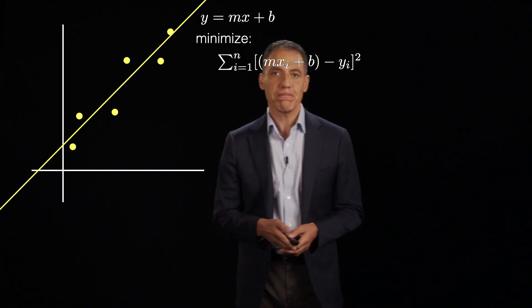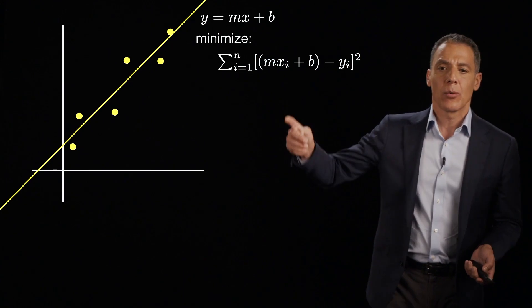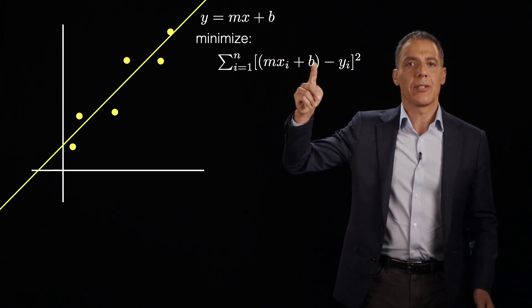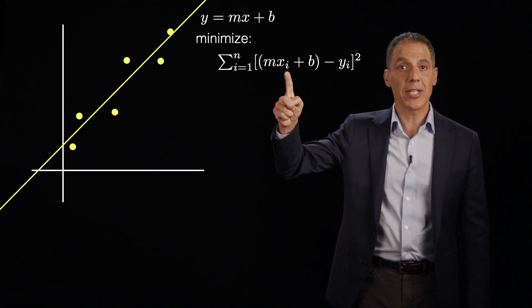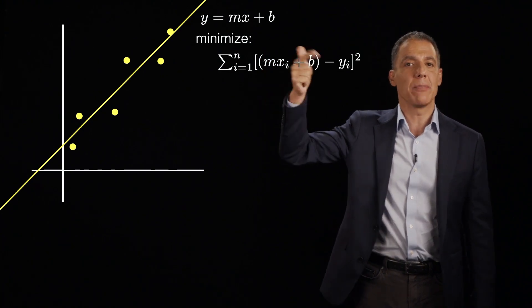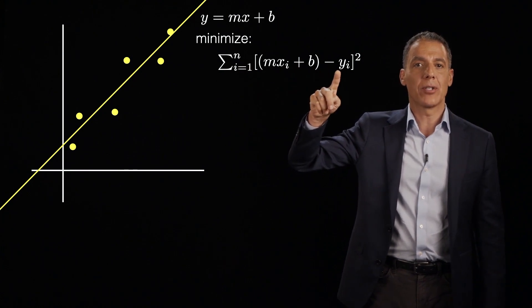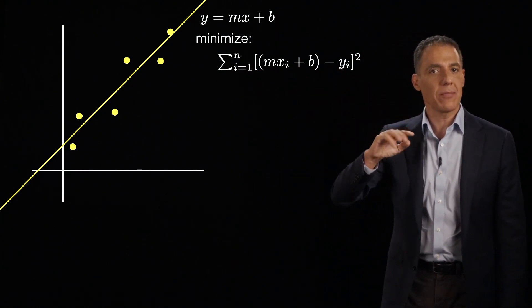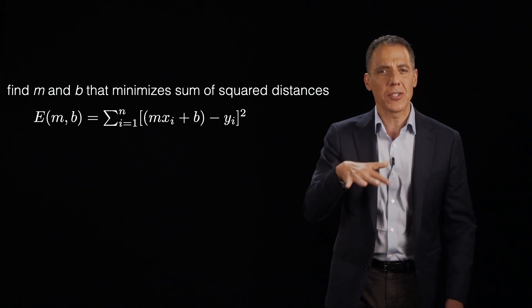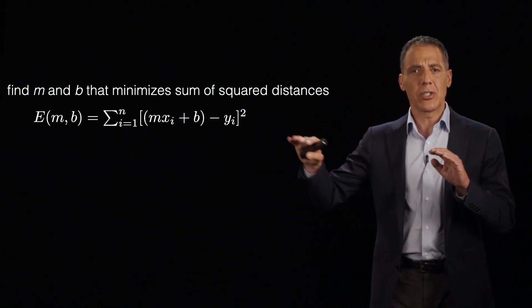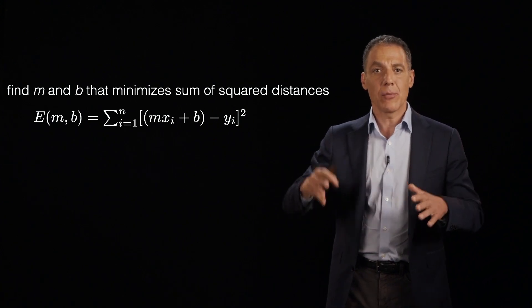Let's now look at the generalization of fitting y equals mx to a line with a slope and an intercept — two unknowns instead of just one. We're going to play the same game as before: start with our model y equals mx plus b, define the quadratic error function as the sum of the square of the vertical distance between what the model predicts, mx_i plus b, and the actual value y_i. We expand it out and notice it's a parabola.